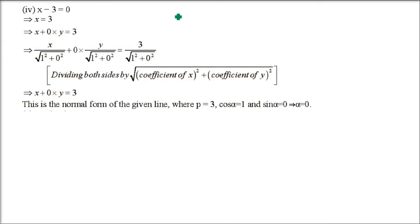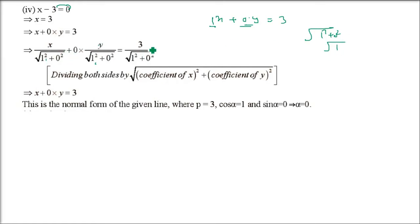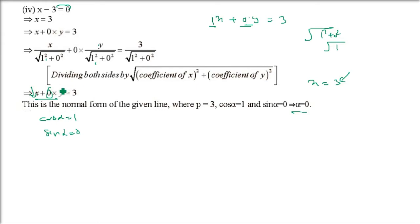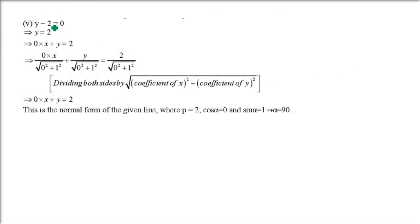For x - 3 = 0: there is no y term, but we write it purposefully as x + 0·y = 3 to show the coefficient of y is 0. Squaring and adding: 1² + 0² = 1, √1 = 1. Dividing by 1 does not change anything. The equation stays x = 3. cos α = 1 and sin α = 0, which means α = 0°. And p = 3.